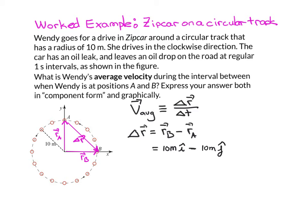Now, what about delta T? Delta T is the time interval between when the zip car is at points A and B. To get that time interval, we just need to count the dots because we know the dots are one second apart. That's one, two, three, four. So delta T is clearly four seconds.